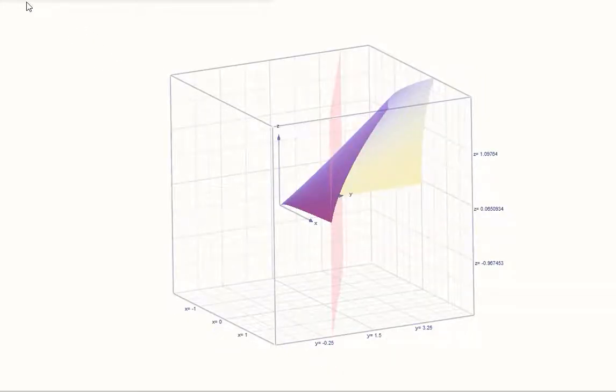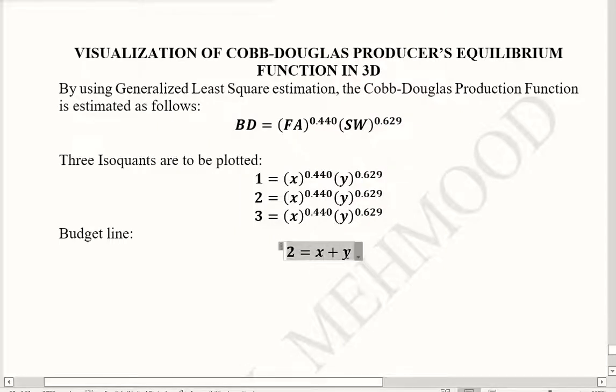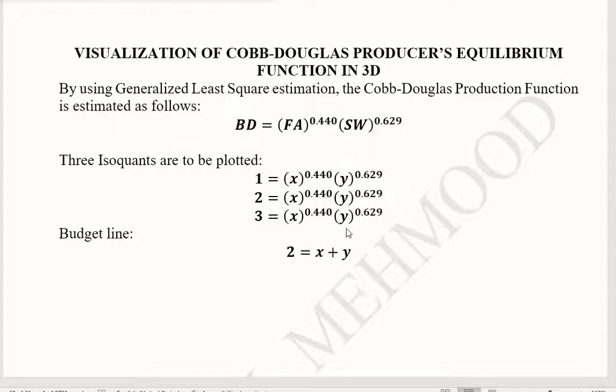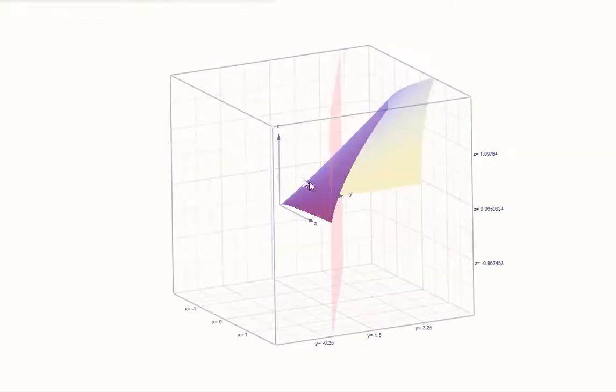Now we have introduced the budget line. This is the equation. We are assuming that the prices of labor and capital, they are equal to 1. Here, for the sake of ease, we have used X instead of FA and Y instead of SW. Because in the visualization, X and Y axis, they need to be more visible. So X is representing FA and Y is representing SW. So this is the visualization of the producer's equilibrium, where this light colored surface is basically representing the budget line and this purple shaded surface is the production function. This slice of it would be the iso-quant where the output is fixed.